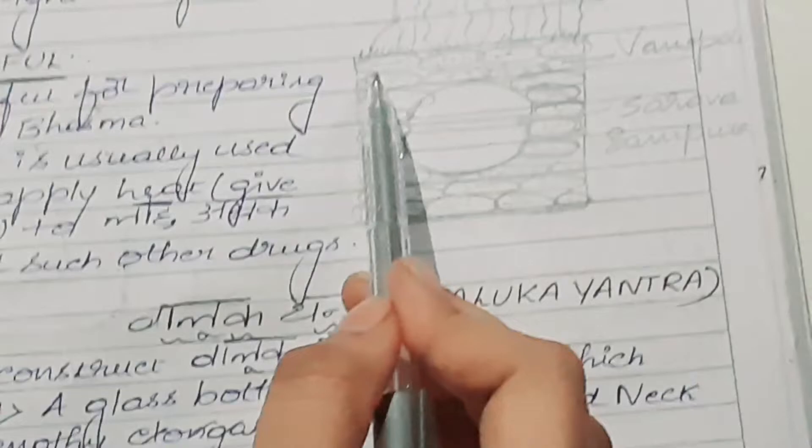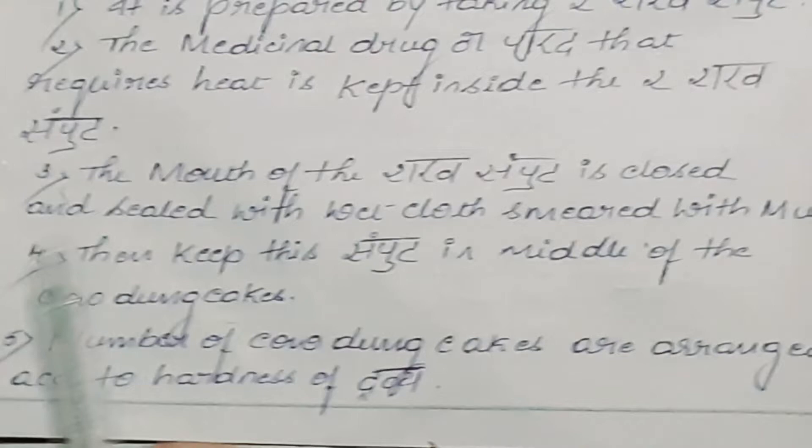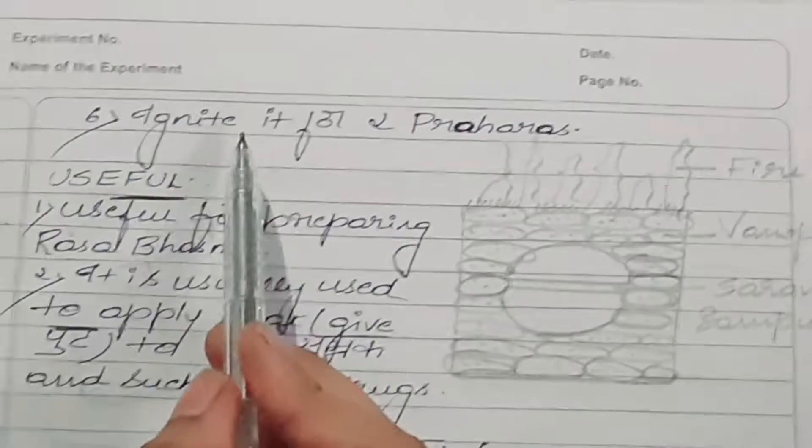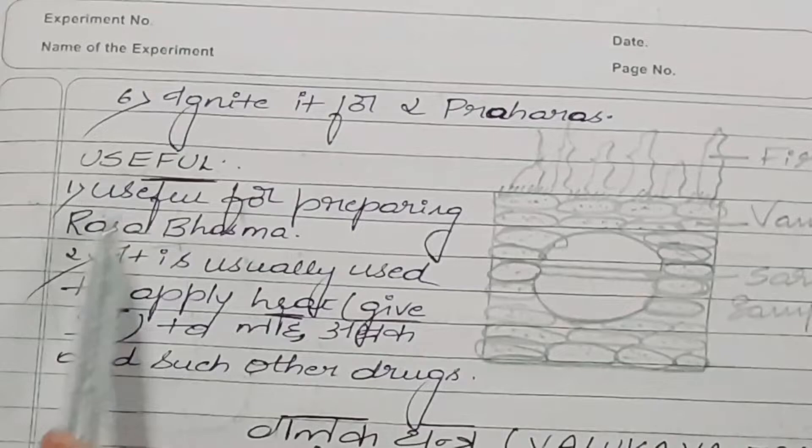Then keep this samputta in the middle of cow dung cakes or vanopulas. The number of cow dung cakes are arranged according to the hardness, then ignited for two praharas.